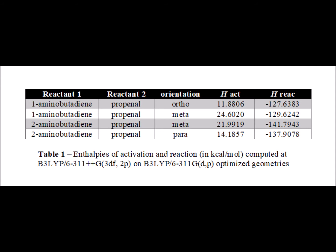In this video, we are going to take another look at the Diels-Alder reaction — specifically the case when the diene and the dienophile are asymmetric. The dienes will either be 1-amino-1,4-butadiene or 2-amino-1,4-butadiene, and the dienophile is going to be propenal.